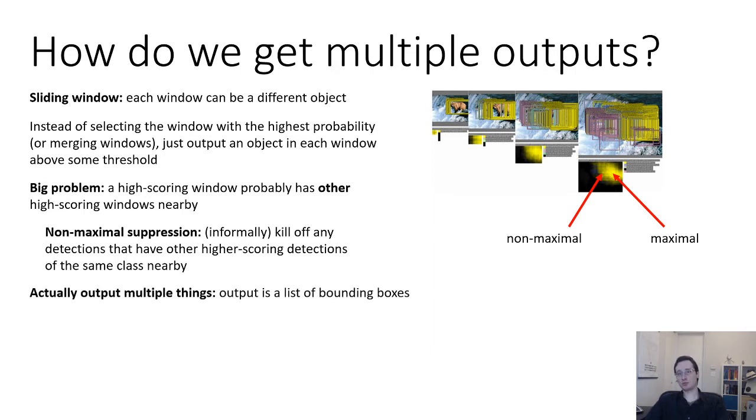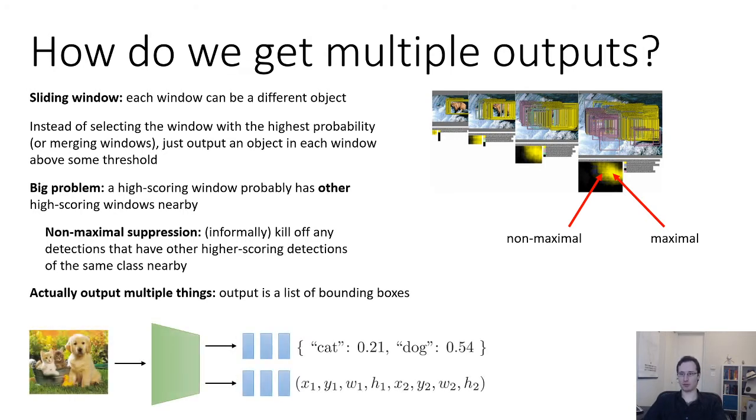Now another approach you could use, very different from sliding window, is to actually have a model that outputs multiple things. Like actually literally have your model output a list of bounding boxes. So you output not just one classification, not just one bounding box, maybe you output two or three. You pick some fixed number and then you declare that it's a true bounding box if the probability of the corresponding class is high enough. Otherwise you say that it's not there.